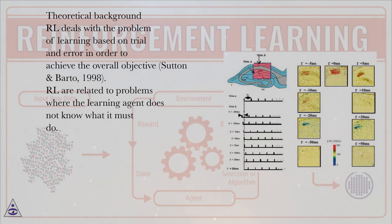Theoretical background. RL deals with the problem of learning based on trial and error in order to achieve the overall objective, Sutton and Barto, 1998.